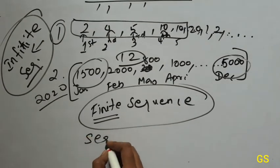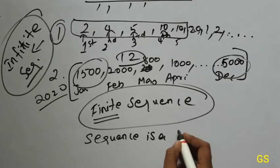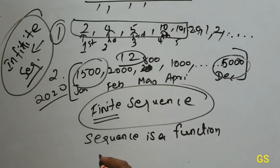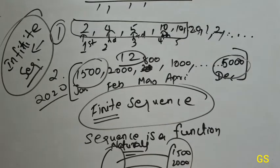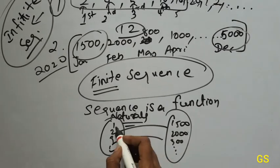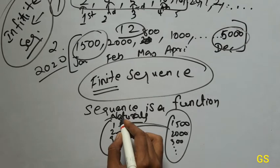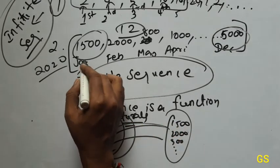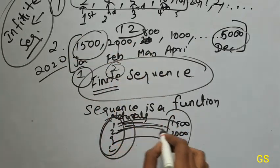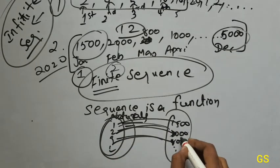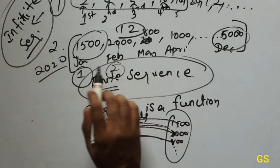Sequence is a function — basically sequence is a function from the set of all natural numbers. Natural numbers map to anything: 1500, 2000, 3000. Natural numbers are 1, 2, 3 — it is a map. First month is 1500, second month is 2000, one maps to 1500, two maps to 2000, third month is 800. First, second, third — each number is specific.